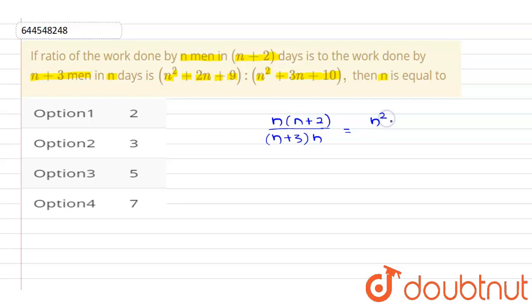Now this ratio is given as (n²+2n+9)/(n²+3n+10). This is what is given.